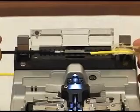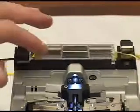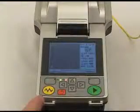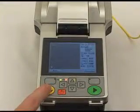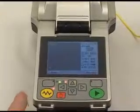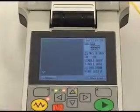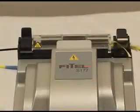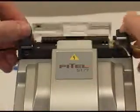Now place in the heating oven to heat shrink the protective sleeve over the fusion splice. Press the yellow button that will begin the heating process to permanently protect the fusion splice. At the conclusion of this process, the S177 will give positive indication that the process is now complete.